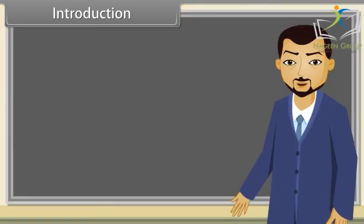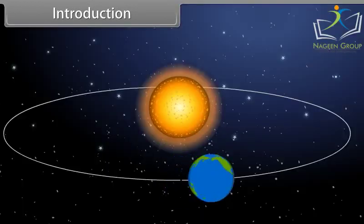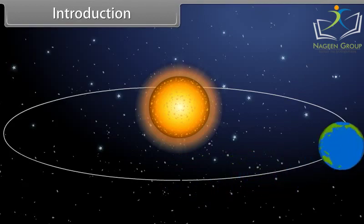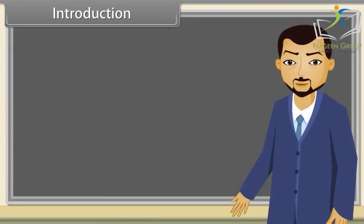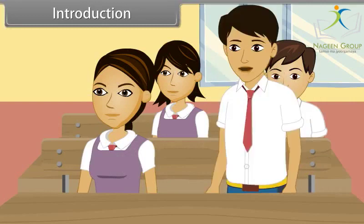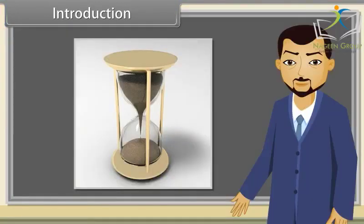Do you know what kind of path the earth follows while revolving around the sun? Yes, it is elliptical in shape. So finally, who will tell me what kind of shape this object has? It has a hyperbolic shape. In this lesson, you will learn how to analyze these shapes and what role they have played in designing various objects.